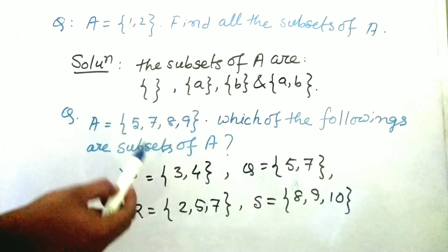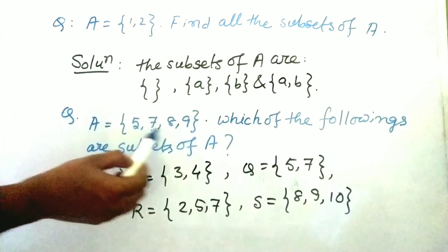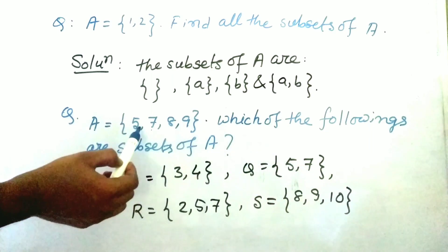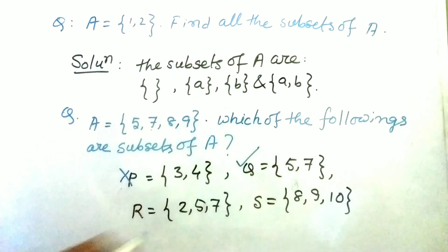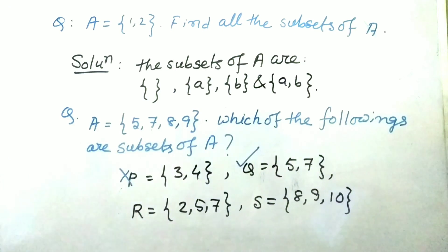Now 5, 7. Now see this 5 and 7, these two elements belong to this set A. So obviously Q is subset of A.